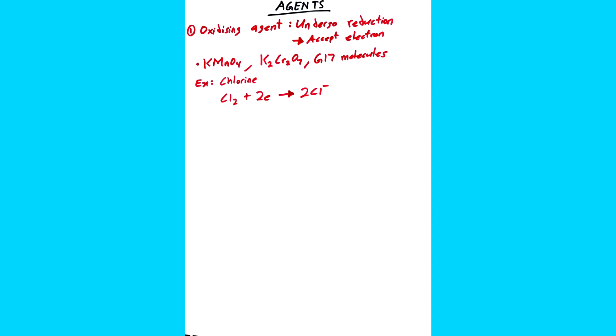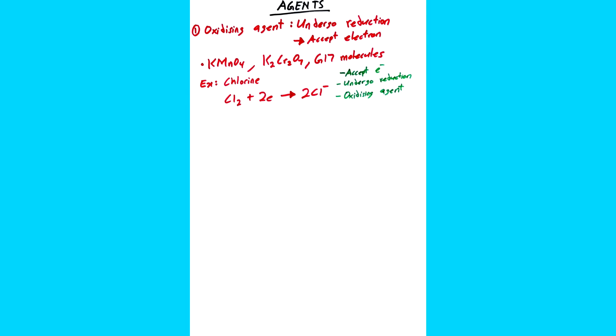Cl2 accepts electrons and undergoes reduction. Therefore, chlorine is an oxidizing agent.